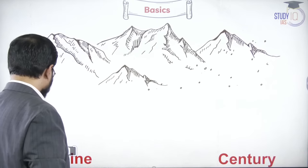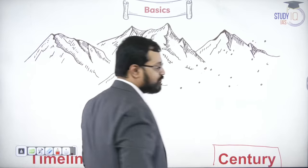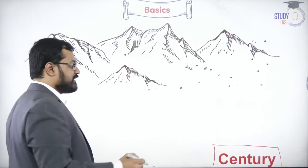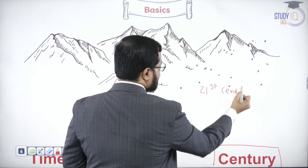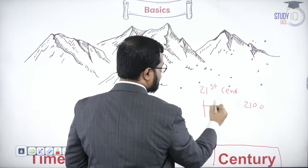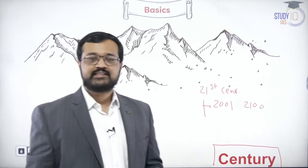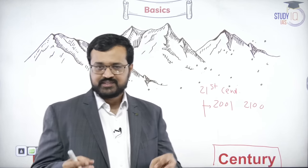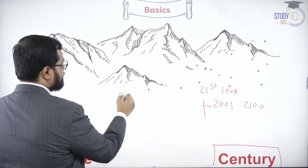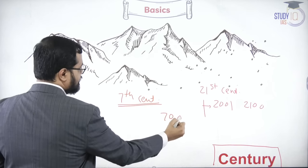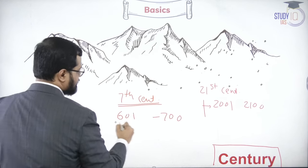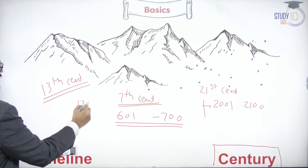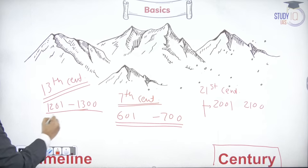The second important thing is the century. Century is quite important — many UPSC questions can be solved with the century concept alone. A century means a period of 100 years. India right now is in the 21st century. The 21st century started from 2001 and will end at 2100. A simple trick: whatever century I say — for example 7th century — you put 700 at the end, and the 100 years before it make that century. So 13th century means 1300 at the end, and the preceding 100 years form your 13th century.